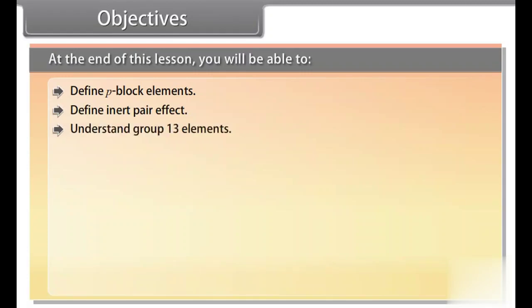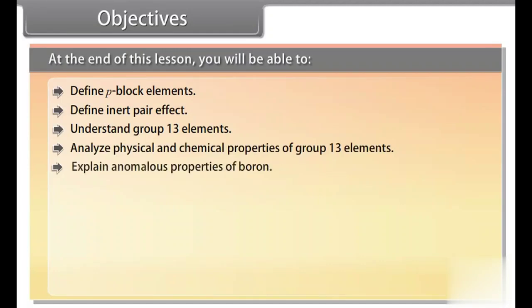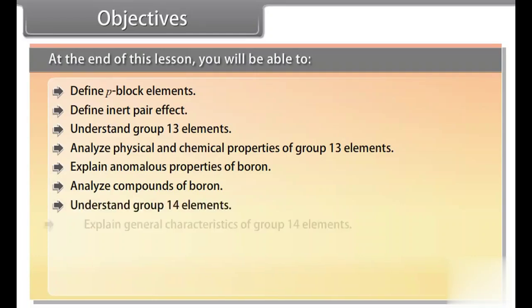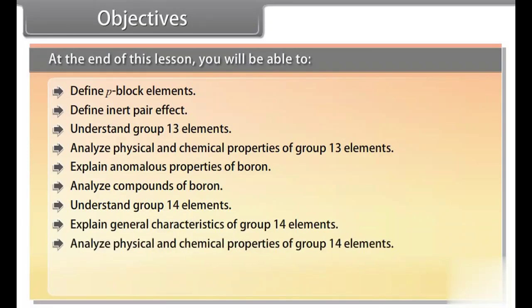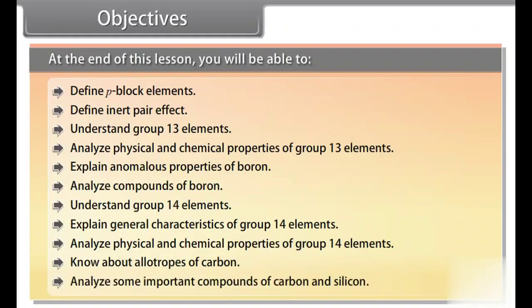Objectives. At the end of this lesson, you will be able to define p-block elements, define inert pair effect, understand group 13 elements, analyze physical and chemical properties of group 13 elements, explain anomalous properties of boron, analyze compounds of boron, understand group 14 elements, explain general characteristics of group 14 elements, analyze physical and chemical properties of group 14 elements, know about allotropes of carbon, analyze some important compounds of carbon and silicon.